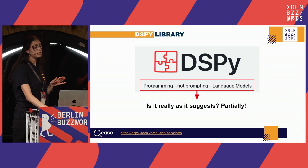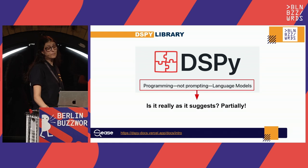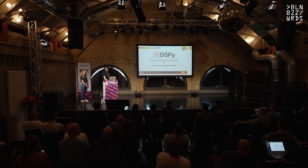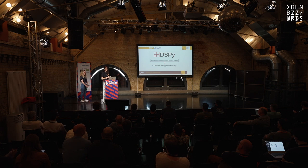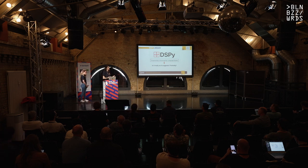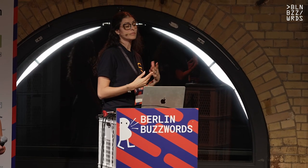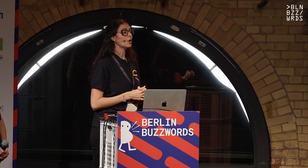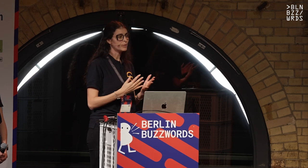The slogan of the library is 'programming, not prompting, language models.' From our experiments, this goal is partially achieved — you cannot fully program the model to get the desired result 100% of the time. Instead, you can create the best possible prompt and check results afterwards, thanks to the validation feature: you can set the type of input and output, but if the model response doesn't match, validation will fail with no way to fix it. We would like to go deeper and study more of this library, as there are other useful features we haven't had time to fully explore. We are very happy to discuss insights with anyone who has worked with this library more.